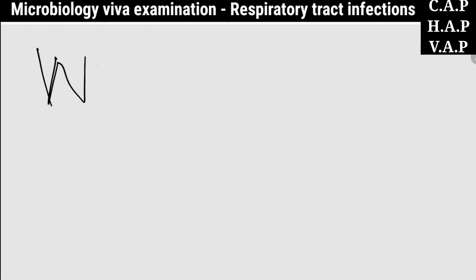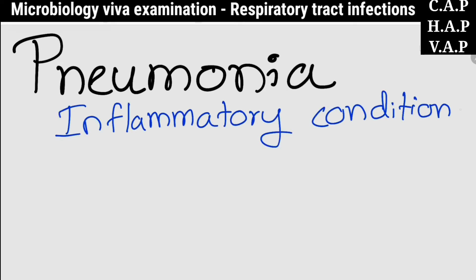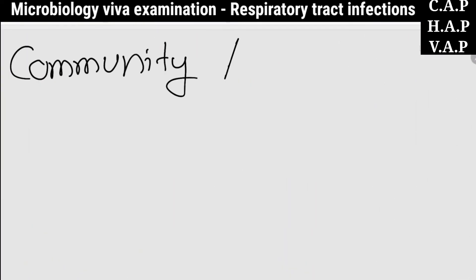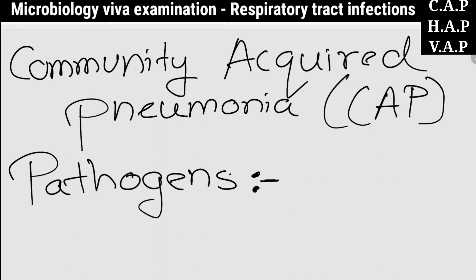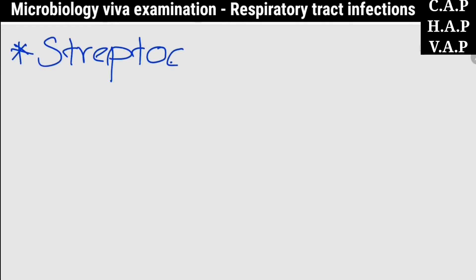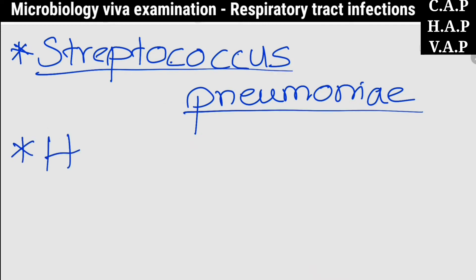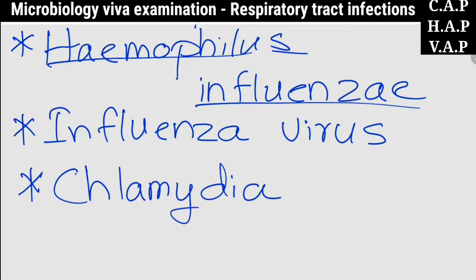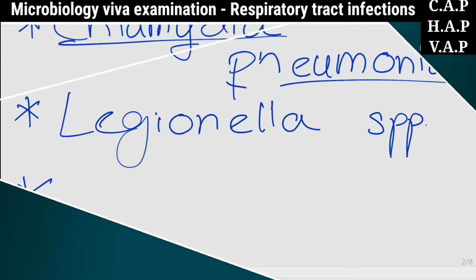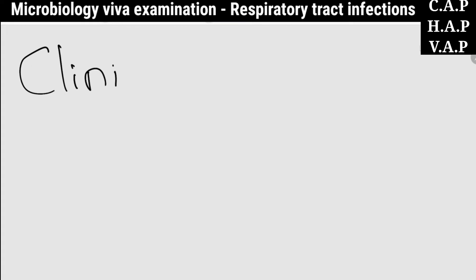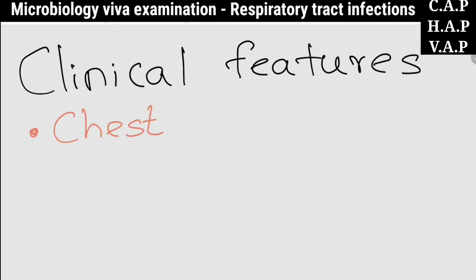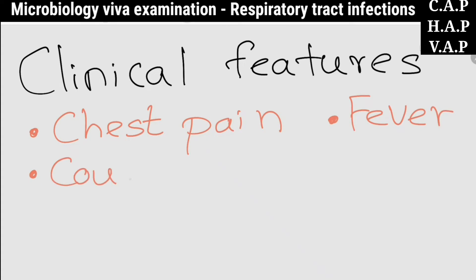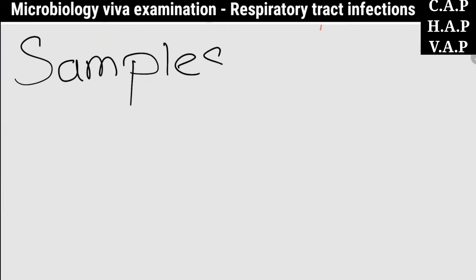What is pneumonia? It is an inflammatory condition of the lung in which fluid fills the alveoli. Some pathogens causing community-acquired pneumonia include Streptococcus pneumoniae, Haemophilus influenzae, influenza virus, Chlamydia species, Legionella species, and Mycoplasma species. The clinical features of pneumonia include chest pain, fever, cough, and discolored sputum.